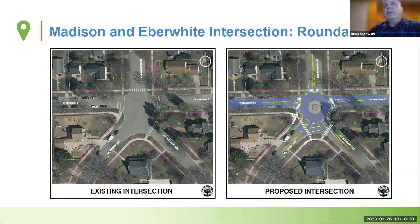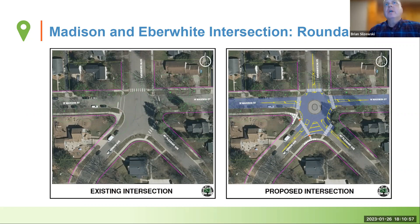On the right side is the proposed reconfiguration — to remove the stop controls on Madison Street, essentially providing a roundabout-type configuration, and then constructing the missing crosswalk at Mount Vernon for pedestrians. That's a quick overview of the intersection improvements. Cynthia, do you want to talk more about the reasoning behind it?